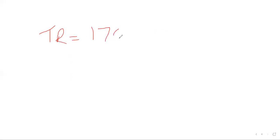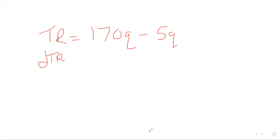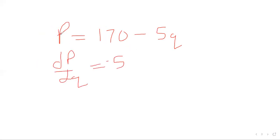What about if you have TR — total revenue — equal to 170Q minus 5Q squared? Anything with a T when differentiated becomes an M, so the T changes. On the previous equation, P is equal to 170 minus 5Q. We are differentiating the letter on the left side against the letters on the right side.